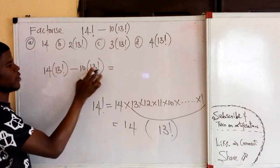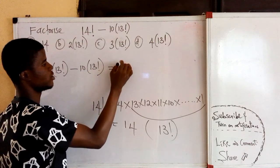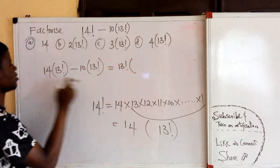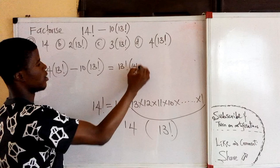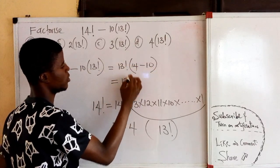13 factorial is common to both of the terms. I will bring it out. 13 factorial, open a bracket, 14 minus 10. So this is 13 factorial.